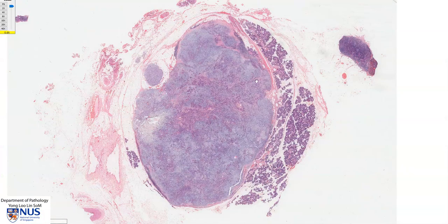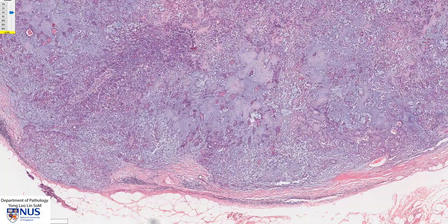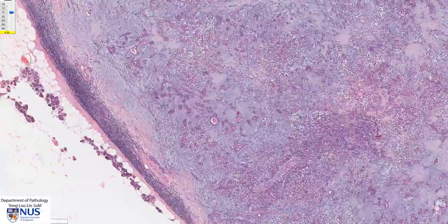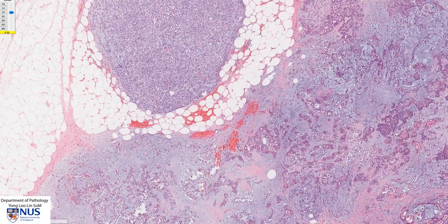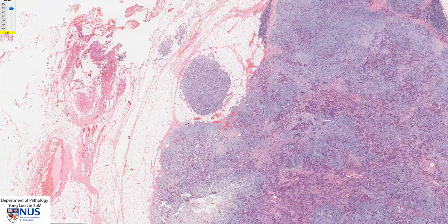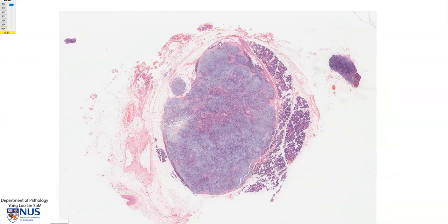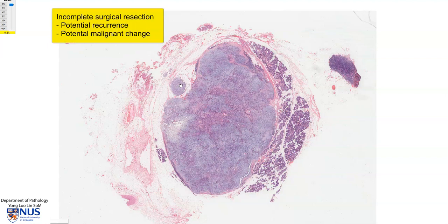Pleomorphic adenomas are one of the commonest benign tumours in salivary glands and often occur in the parotid gland. In this particular tumour, in some areas we can see a fibrous capsule, however in other areas there is no definite discernible capsule, and sometimes you can have nodules of tumour poking out of the original main mass. This is why pleomorphic adenomas need to be excised with a margin of surrounding normal tissue; otherwise, parts of the tumour can be left behind, causing recurrence or even malignant transformation in later years. When pleomorphic adenomas undergo malignant transformation, the diagnosis is carcinoma ex pleomorphic adenoma.